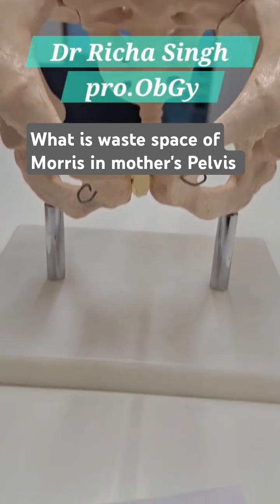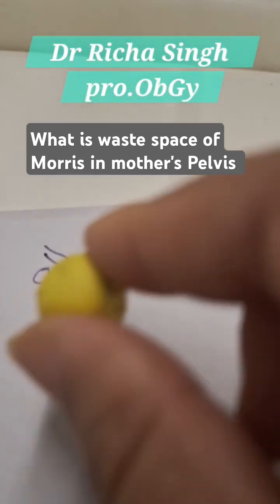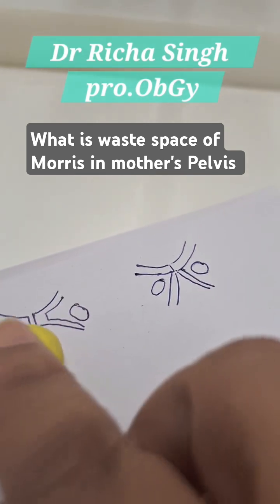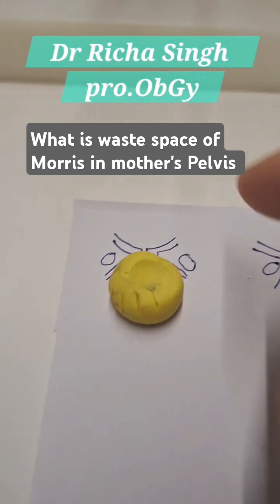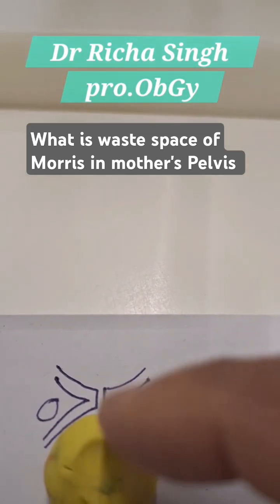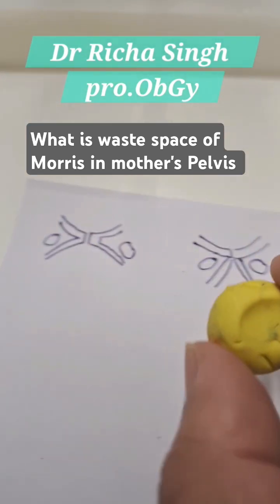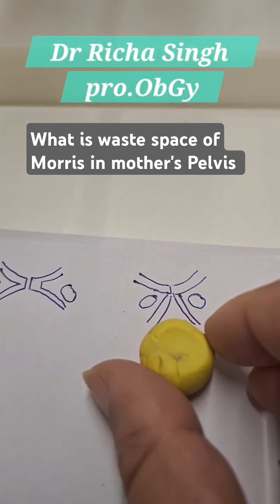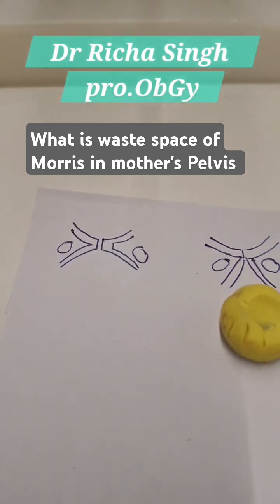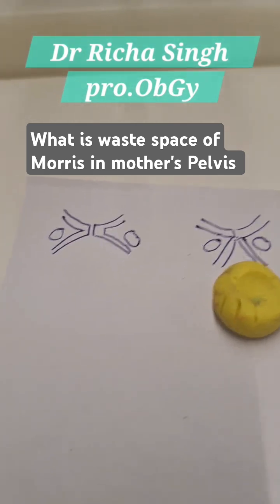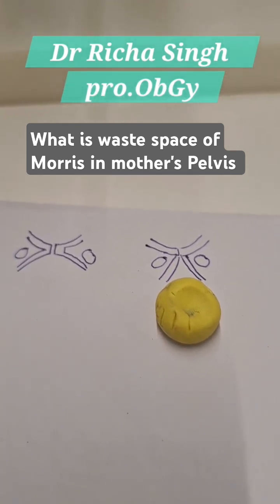To understand better — if this was the baby's head and the angle is very wide, as you can see in this picture, placing it here accommodates it with no wasted space in between. But if the baby's head is placed where the angle is very acute, there will be a lot of space wasted between the pubic symphysis and the head of the baby. This concept is called the Waste Space of Morris. So, the narrower the sub-pubic arch, the more the chances of injury and outlet obstruction.